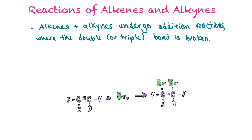Alkenes and alkynes can undergo addition reactions where the double bond is broken and filled up with atoms of a different molecule. In this example, ethene reacts with bromine: the bromine breaks the double bond, and a bromine ends up on each carbon, giving dibromoethane.